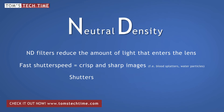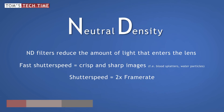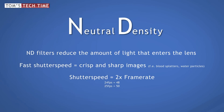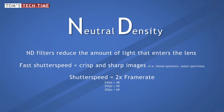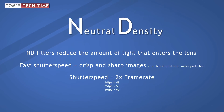The shutter speed should be twice the frame rate. 24 frames per second makes a shutter speed of 48, 25 frames per second makes a shutter speed of 50, and 30 frames per second makes a shutter speed of 60. Let's do a side-by-side comparison.